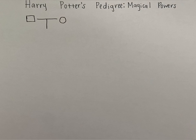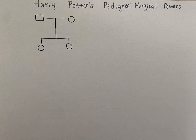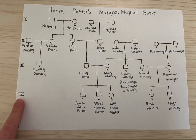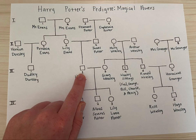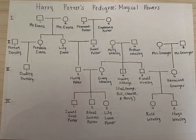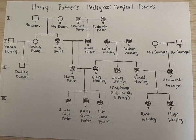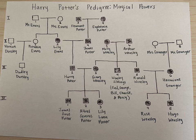Two symbols connected with a T-bar denotes two people that mated, and any offspring are connected below them. Vertically, the Roman numerals denote different generations, while horizontally, the Arabic numerals denote different people within a generation. Based on the books and movies, we know the following individuals have magical powers, while the others do not. Now that we know everyone who has magical powers, we need to determine how this trait is passed on.